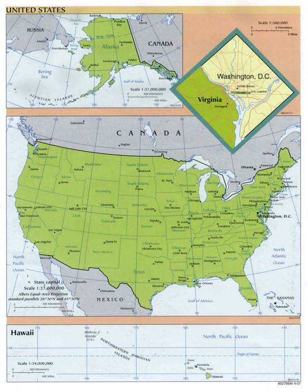Political divisions, also referred to as administrative divisions of the United States, are the various recognized governing entities that together form the United States — states, territories, the District of Columbia, and Indian reservations.